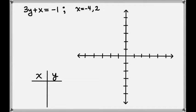Let's do some more examples of graphing linear equations by plotting points. The first one we'll look at is 3y plus x equals negative 1, and we're going to use the two x values x equals negative 4 and x equals 2.